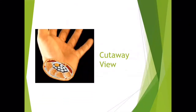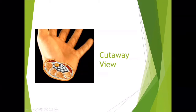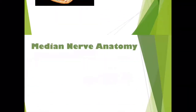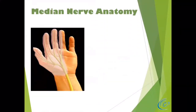Here is a cutaway view of the wrist. Here's the flexor retinaculum or carpal ligament, here are all the tendons, and here's the median nerve. You've got a little bit of space — not that much. If this ligament gets thickened, the space gets decreased, this nerve gets compressed, and you get difficulty with nerve impulses going from the digits through this nerve through the spinal cord up to your brain.